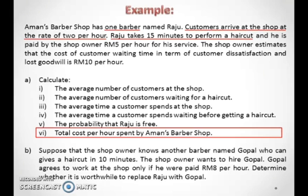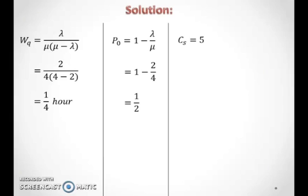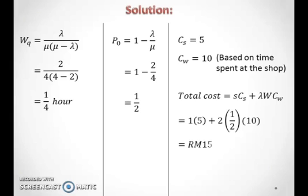To calculate the total cost per hour for Aman's Barber Shop, identify service costs and waiting costs. Raju is paid 5 ringgit per hour for his service. The shop owner estimates that the cost of customer waiting time in terms of customer dissatisfaction and lost goodwill is 10 ringgit per hour. Thus, service cost equals 5 and waiting cost equals 10. To calculate total cost, substitute the values of S, service cost, lambda, W, and waiting cost into the total cost formula.